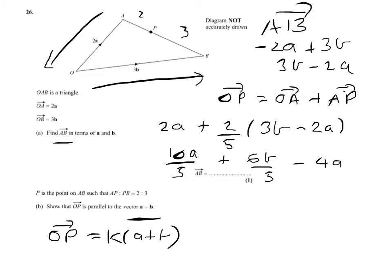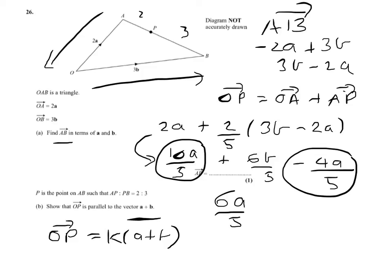One annoying feature of using an iPad to do this is that occasional splurge, so it's minus 4 fifths of A. Now you can see the reason why I've changed my 2A over, I'd have had to have done it anyway, because I wanted to bring the A's together. So that's 10A over 5 minus 4A over 5, which gives me 6A over 5 plus 6B over 5. We can take the 6 over 5 out as a common factor, leaving A plus B on the inside.